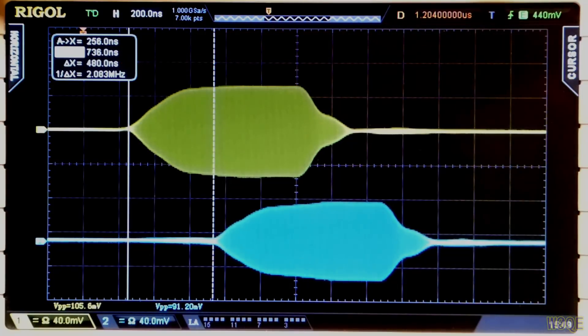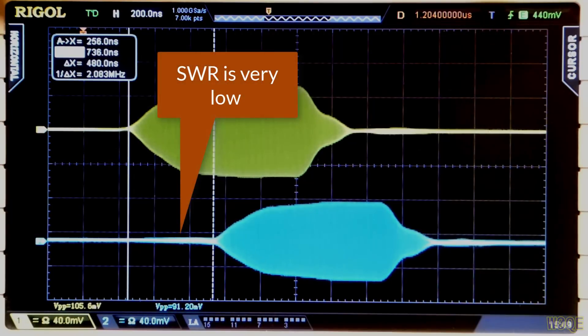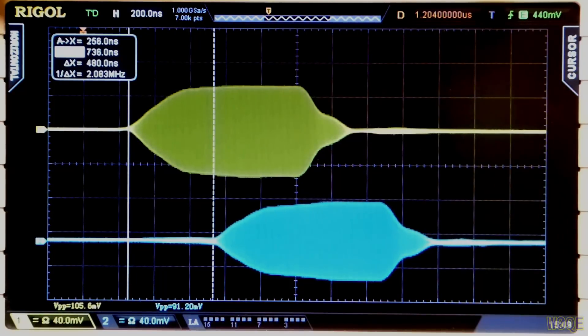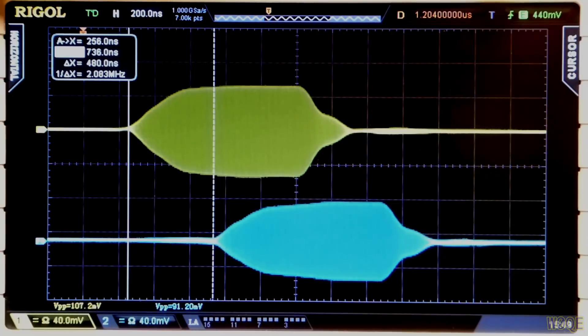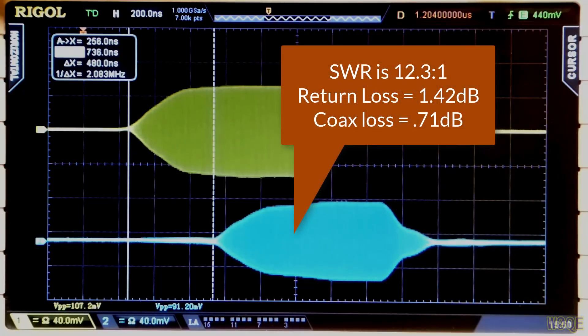Interestingly enough, if we look at the area between the two cursors, what we see is we see a forward signal and no reflected power at all. So that would mean that the transmitter would see a 1-to-1 SWR for 480 nanoseconds. After 480 nanoseconds, we see the reflected power and the forward power both present at the same time. And the ratio of the two of those is the peak on the reflected power is 91 millivolts and on the forward power it's 107 millivolts or so. If we divide those out we can calculate what the SWR is, or we can do that as return loss, and that should be twice the loss of the transmission line. I will do that calculation here and put it on the screen.